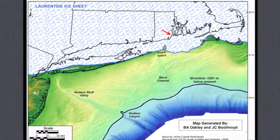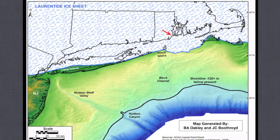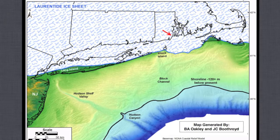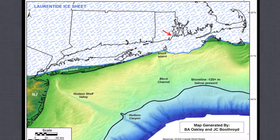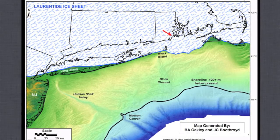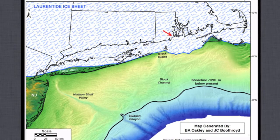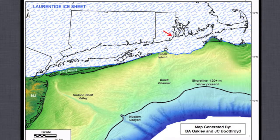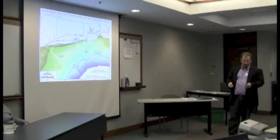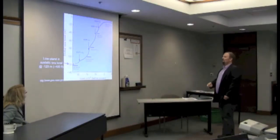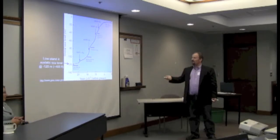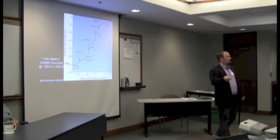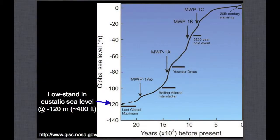At that time, the Laurentide ice sheet and other global ice sheets had a lot of water basically taken out of the ocean to make the ice. There are only so many water molecules on Earth, so if you have large ice sheets, you have less water in the oceans. The shoreline was way out further, meaning all of that was dry land. We can look at global sea level records and see that 26,000 years ago, sea level was about 400 feet lower.